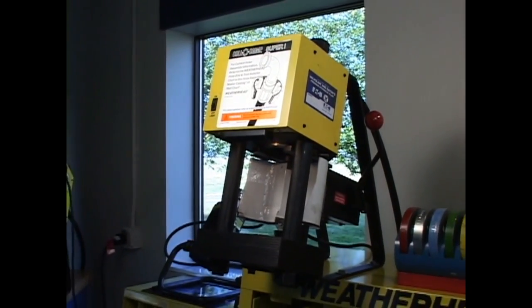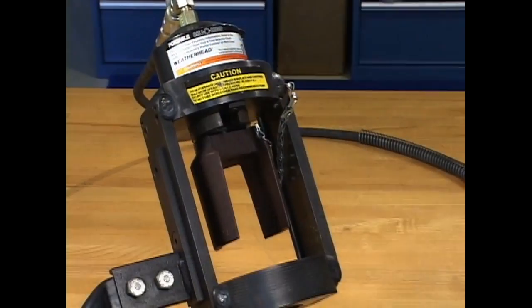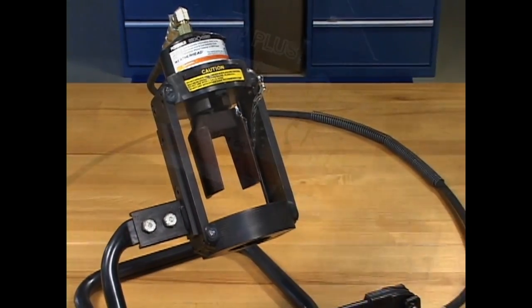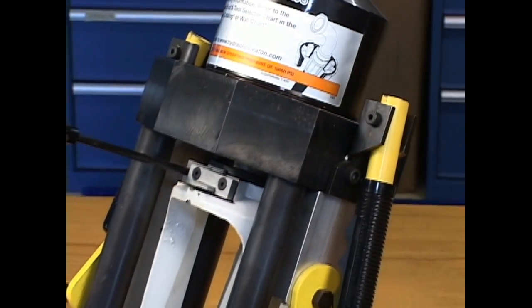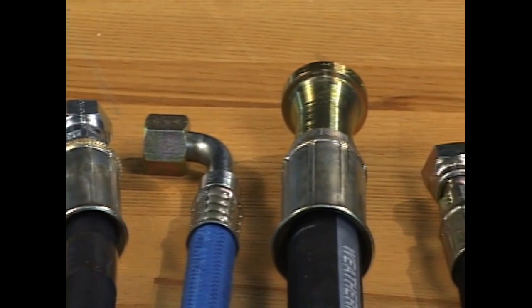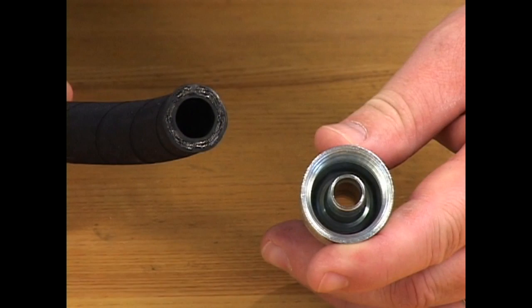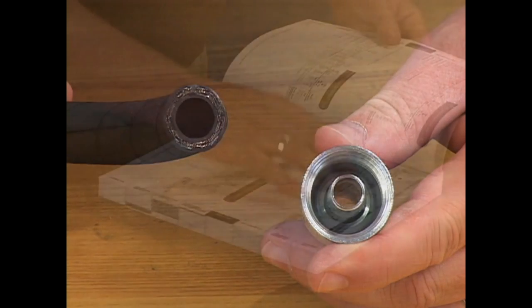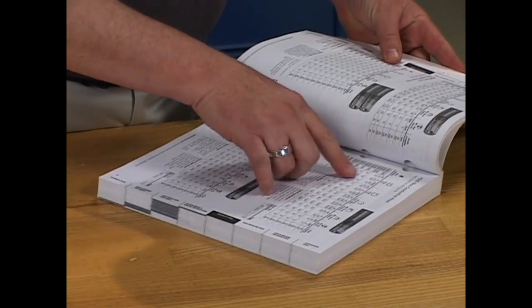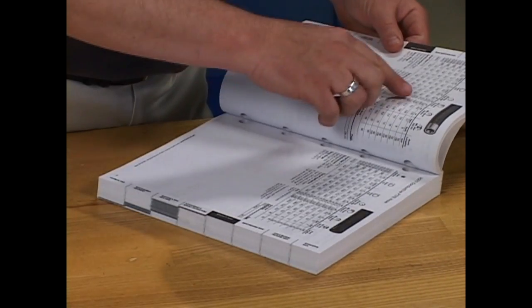What truly sets each ColoCrimp model apart is its size. Not necessarily the size of the machine, but the minimum and maximum sizes of hose and hose ends which each unit will accommodate. If you're using the ColoCrimp for the first time, it's important to check the inside diameter of the hose you want to assemble. Make sure your ColoCrimp model has the capacity to crimp that size hose.